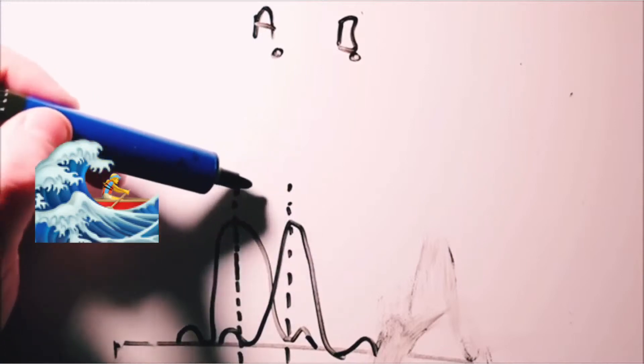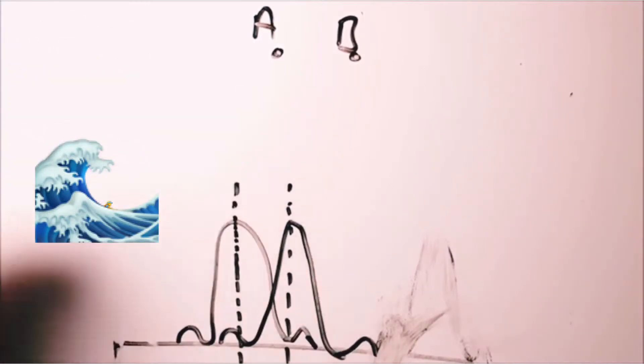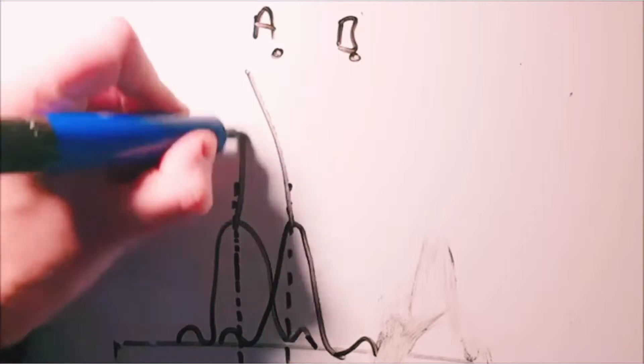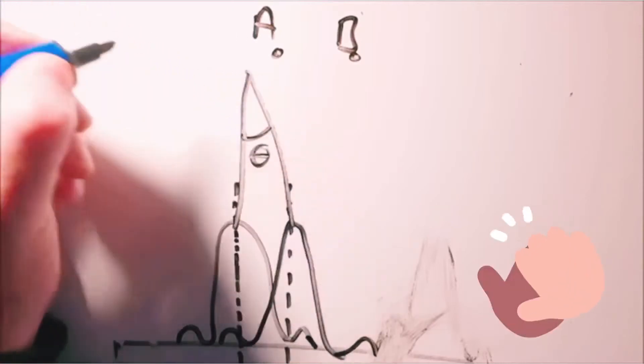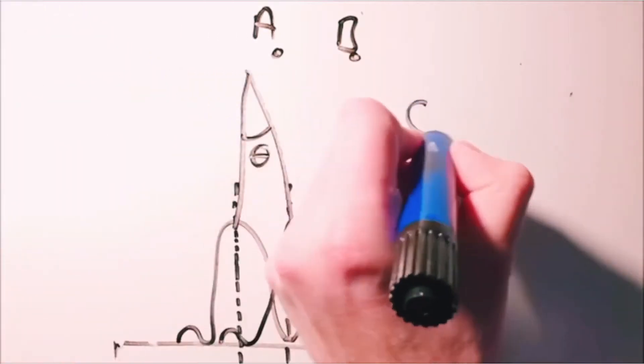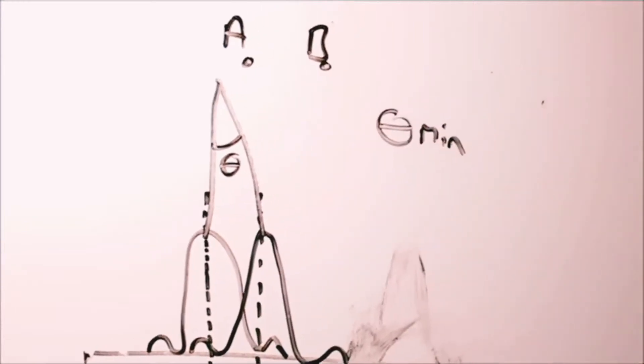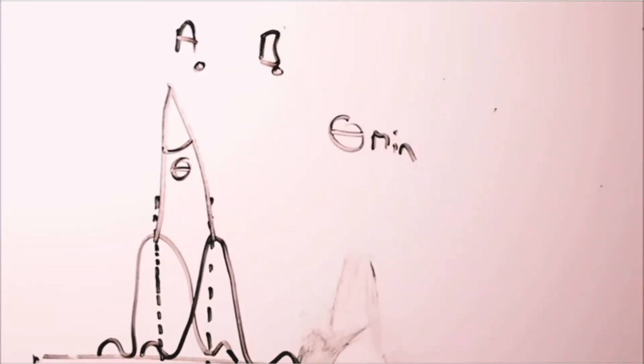Now if they get any closer than this, I cannot resolve them as being two objects. They are one object as far as my eye is concerned. Now there is a viewing angle associated with this. I'm going to call this theta min. So how do I calculate the minimum viewing angle I need?